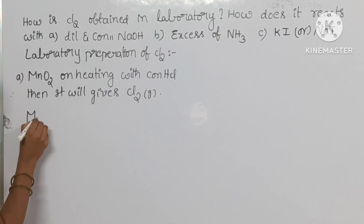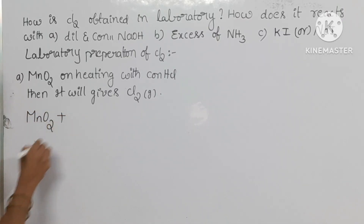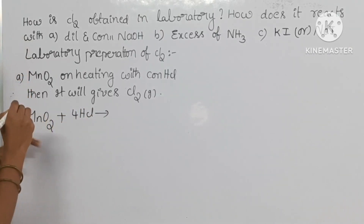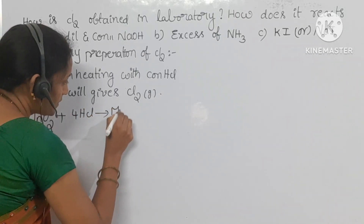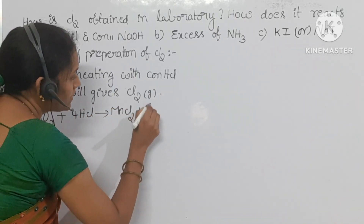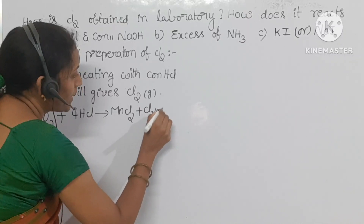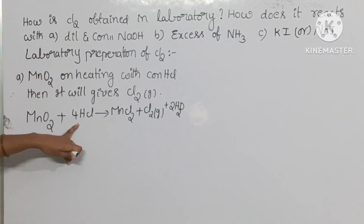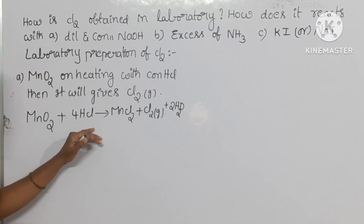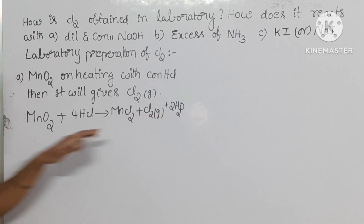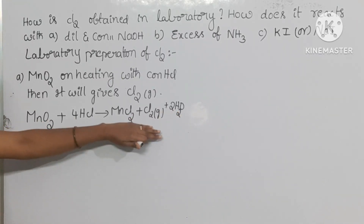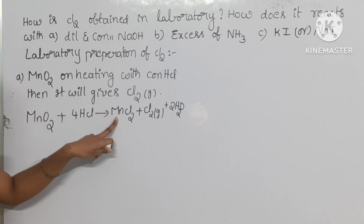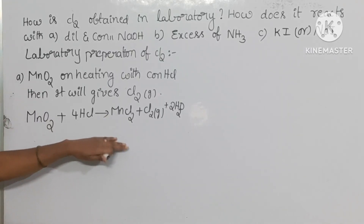You need to take one mole of manganese dioxide reacting with four moles of hydrochloric acid. You will get manganese dichloride, MnCl2, and Cl2 gas. The remaining will be water — two moles of water will be formed because we have four moles of HCl, giving four hydrogens, two oxygens, and four chlorine atoms. This is the first preparation method.